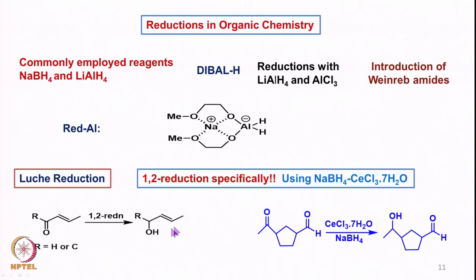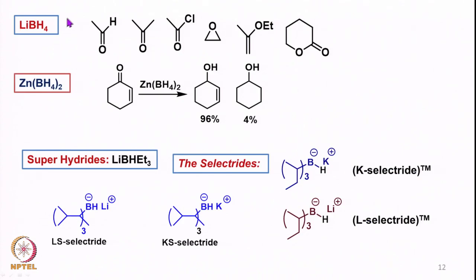Then we looked at how the Luche reduction — a combination of sodium borohydride and cerium chloride — allows selective reduction of enones to allylic alcohols. Then we looked at lithium borohydride, zinc borohydride, superhydride, and the selectrides — all these kinds of reducing agents. We gradually increased steric hindrance and selectivity, and saw how lithium borohydride and zinc borohydride differ from sodium borohydride or lithium aluminum hydride in terms of selectivity.